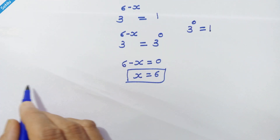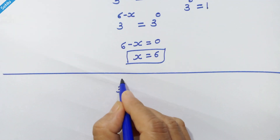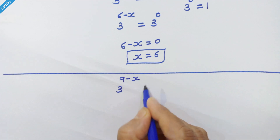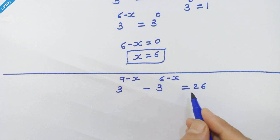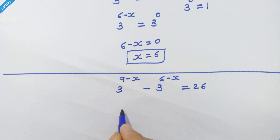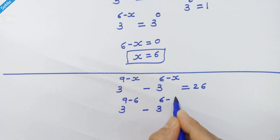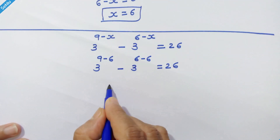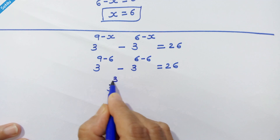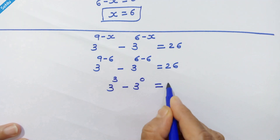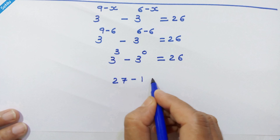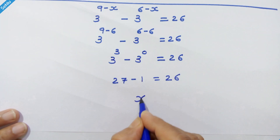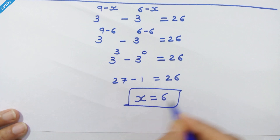Let's verify this in the given equation: 3 raised to (9 minus x), minus 3 raised to (6 minus x), is equal to 26. We put x = 6, so we have 3 raised to (9 minus 6), minus 3 raised to (6 minus 6), is equal to 26. That gives 3 raised to 3, minus 3 raised to 0, which is 27 minus 1, equal to 26. So x = 6 is the correct answer.